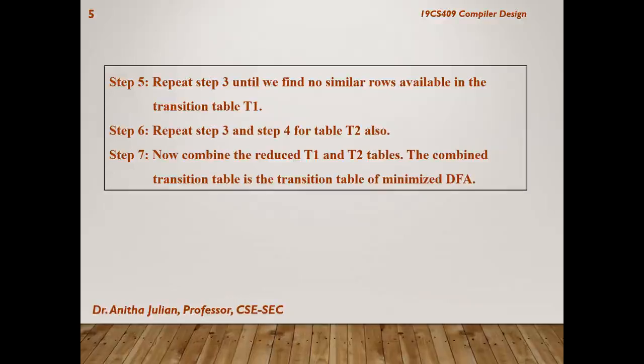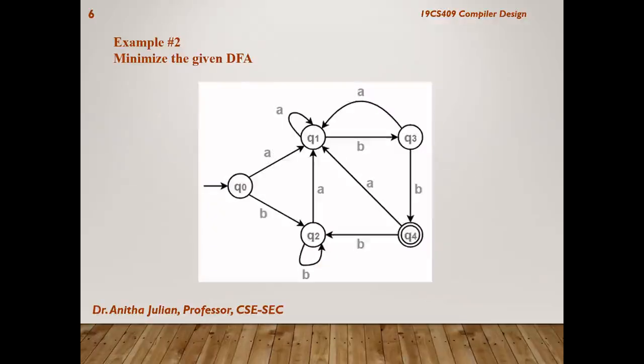And then we can combine both the tables to get the transition table for the minimized DFA. So, we are familiar with the algorithm. Since we have already worked a problem, we will proceed with another example. We are given one more DFA diagram here. And here we have five states.